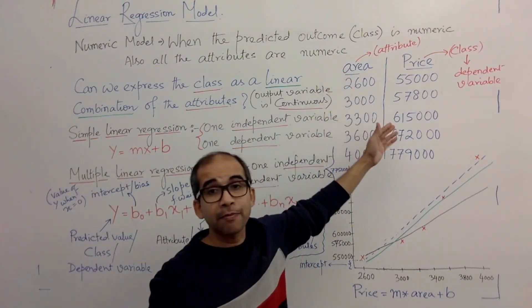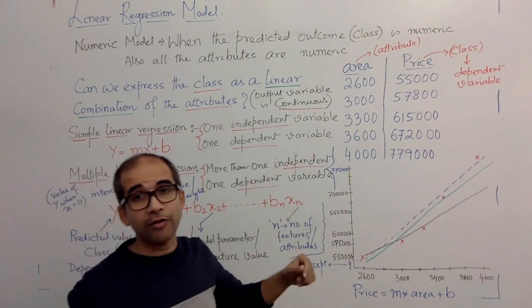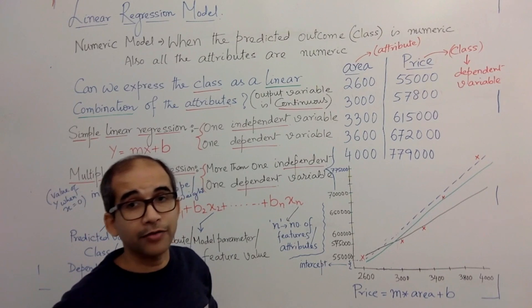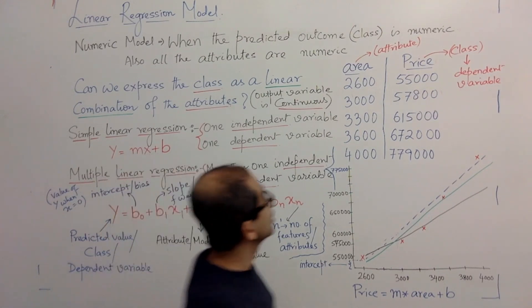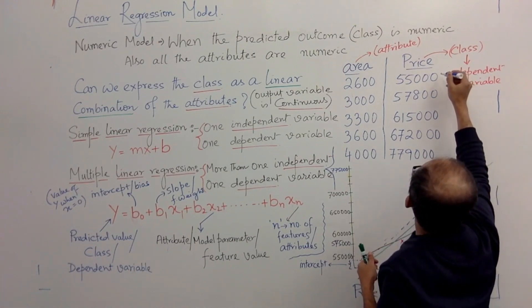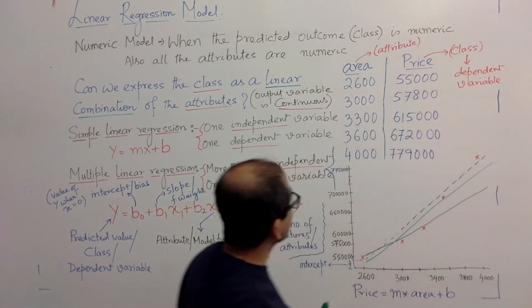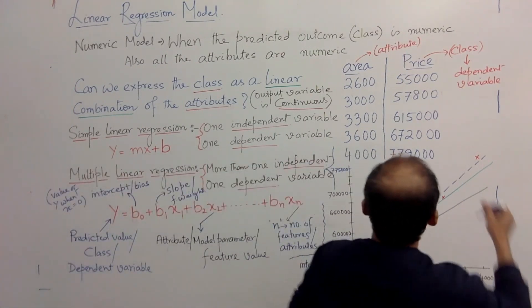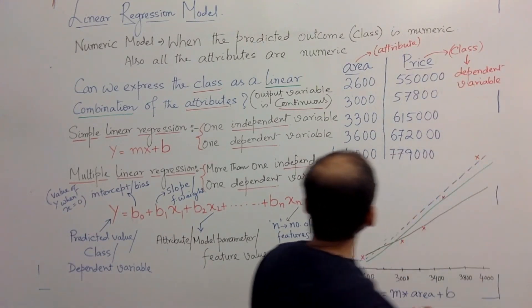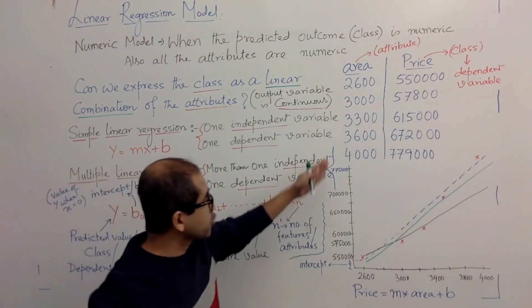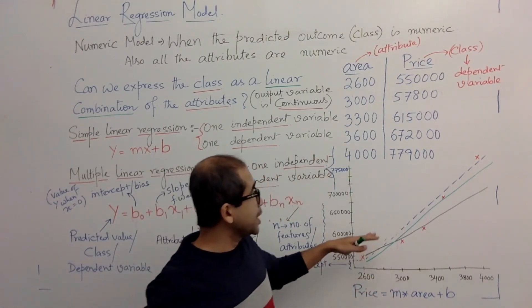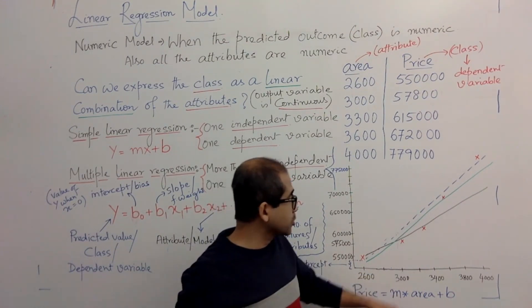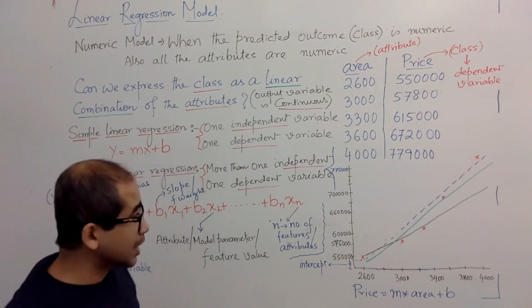We have an example here — the area of houses and the prices. For 2600 square feet, the area is in square feet and the price is in dollars — around 550 thousand dollars. We have tried to plot this, and we can predict this using the equation: price = m × area + b. This is the equation of a straight line.